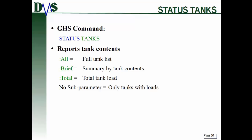Now let's talk about the status tanks list - this is where the subparameters really come in. If you do 'status tanks' with nothing at all, that's the same as reporting all. 'Status tanks:all' gives you your full tank list. 'Status tanks:brief' summarizes by tank contents. 'Status tanks:total' gives you a single-line total. A key difference: 'status tanks' only reports the tanks that actually have liquids in them, whereas 'status tanks:all' reports all tanks including the empty ones.